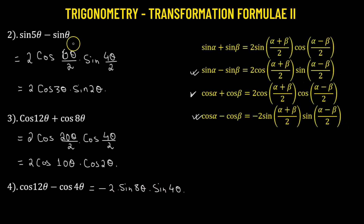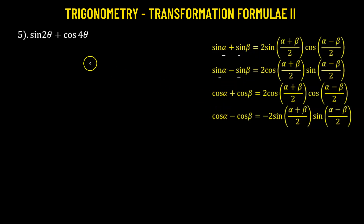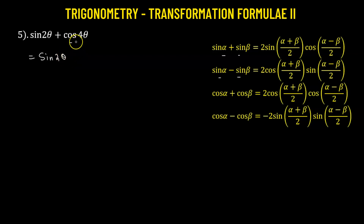Now let's go to the last one, problem number 5. We have sine 2θ added to cosine 4θ. Looking at the transformation formulas, they require either two sine functions or two cosine functions. Since we have one sine and one cosine, our task is to convert one of them to the other. We'll convert cosine 4θ to a sine function.